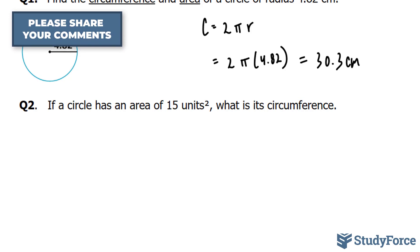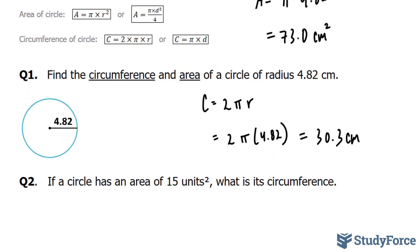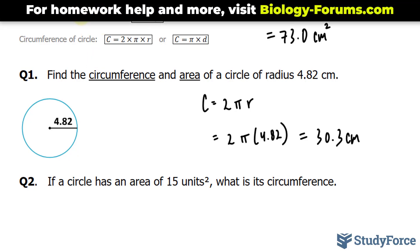The question reads, if a circle has an area, this time of 15 units squared, what is the circumference? So they tell us the area and they want us to find the circumference. Now to find the circumference we need the radius, and we can find the radius by using this formula.